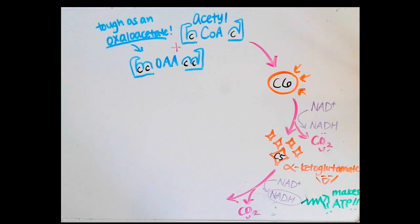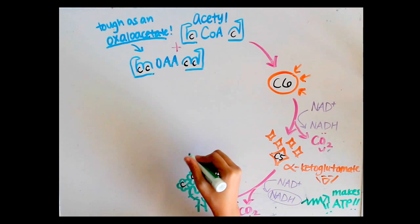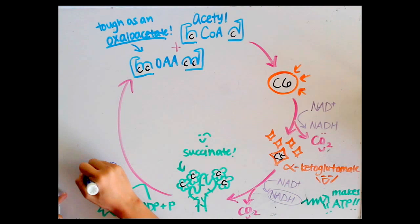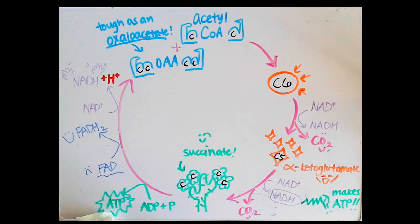Another oxidation follows, another CO2 removed, leaving us with a 4-carbon molecule. Another NADH and ATP created, leaving just enough energy for enzymes to reduce FAD to FADH2, NAD+ to NADH.